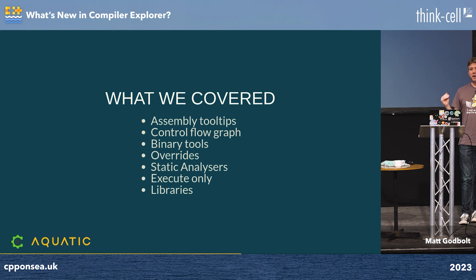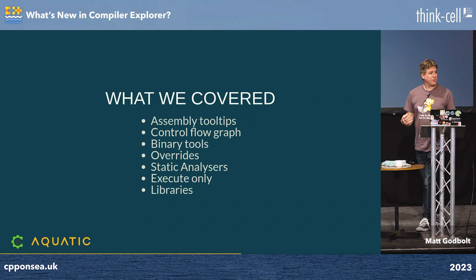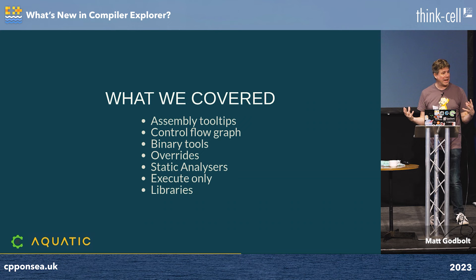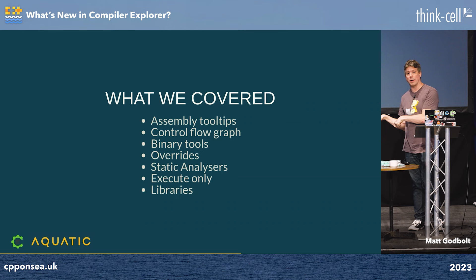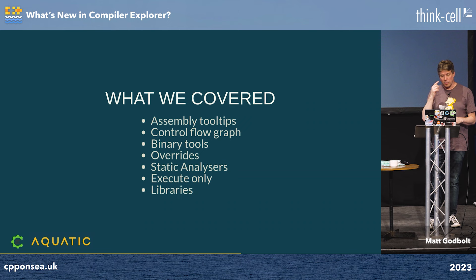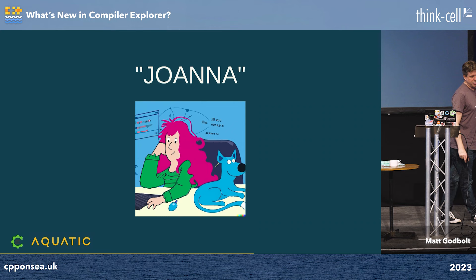In the Mason section we covered: tooltips on assembly opcodes, the control flow graph, binary tools including nm and readelf, different linking modes, the overrides window for picking architectures and C++ standard versions, static analyzers including Clang Tidy and Sonar, the execute-only view with stdin/command-line parameter support, and libraries.